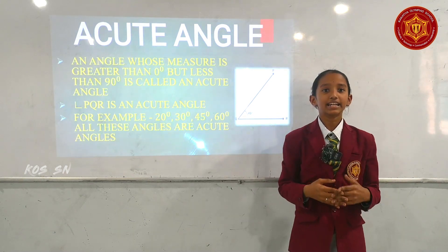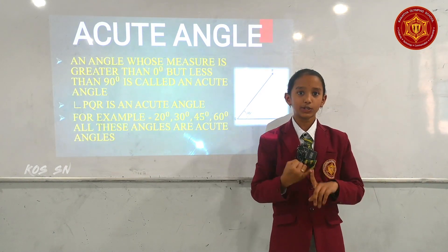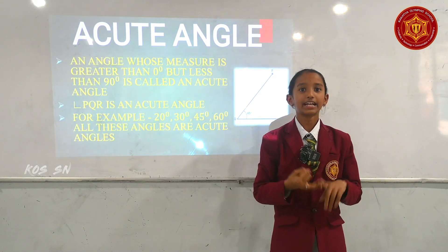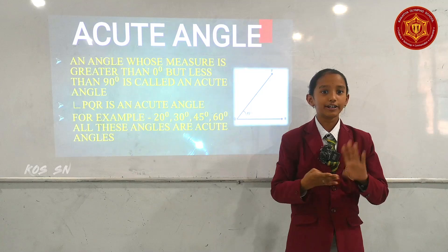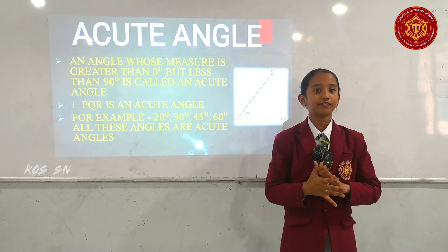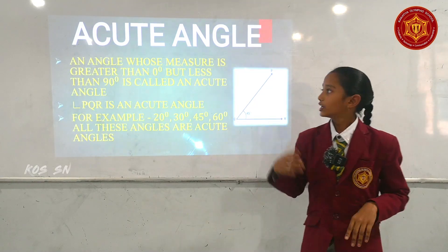Types of Angle. There are 6 types of angles: Acute Angle, Right Angle, Obtuse Angle, Straight Angle, Reflex Angle, and Complete Angle.